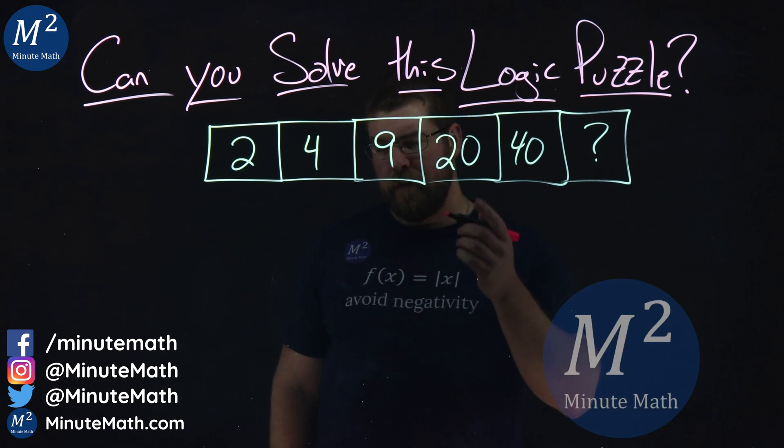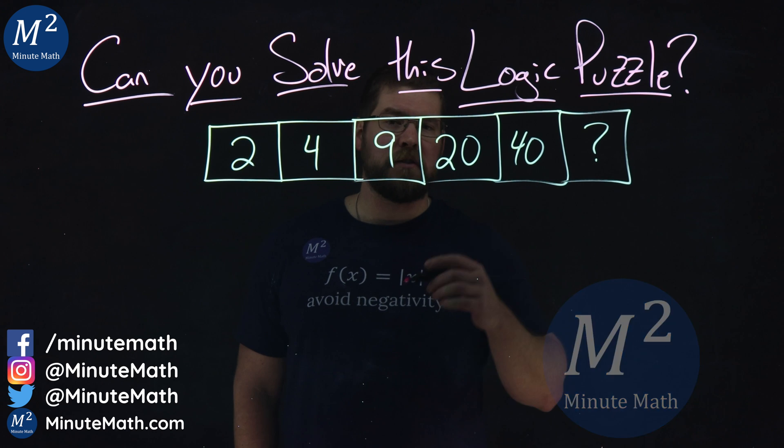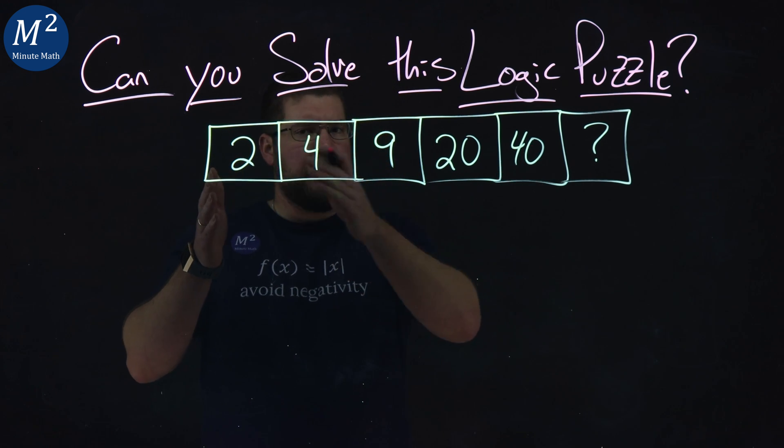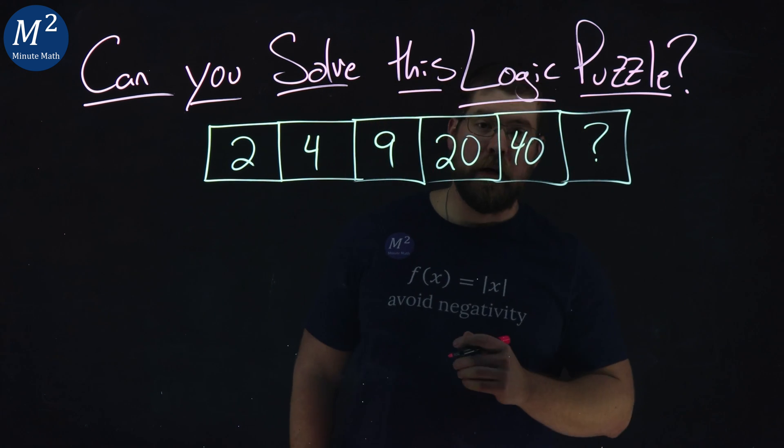Hi, I'm Sean Gannon, and this is Minute Math, and I want to see if you can solve this logic puzzle. This logic puzzle has some numbers laid out: 2, 4, 9, 20, 40, and we don't know what the last number is.